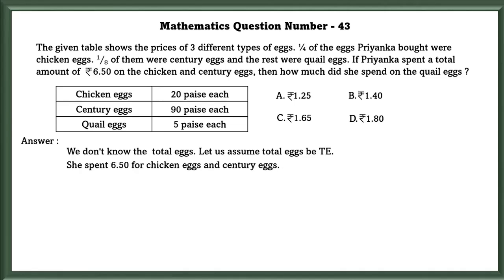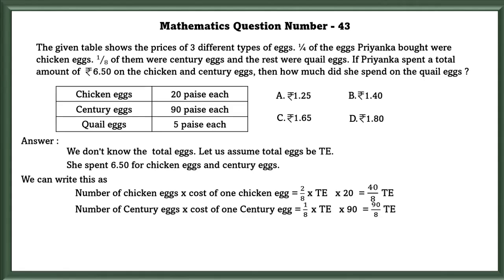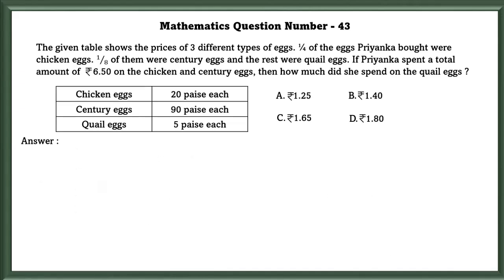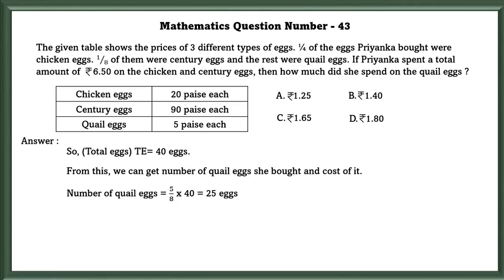She spent 6.50 for chicken eggs and century eggs. We can write it as number of chicken eggs times cost of 1 chicken egg, which is equal to 2/8 times TE times 20, which equals 40/8 TE. And number of century eggs times cost of 1 century egg, which is equal to 1/8 times TE times 90, which equals 90/8 TE. Given 40/8 TE plus 90/8 TE is equal to 650 paise. So from this we can get TE is equal to 40. So total eggs is equal to 40 eggs. From this we can get the number of quail eggs she bought and the cost of it. Number of quail eggs is equal to 5/8 times 40, which is equal to 25 eggs. Cost of 25 quail eggs is equal to 25 times 5 paise, which is equal to 125 paise, which is equal to 1 rupee and 25 paise.